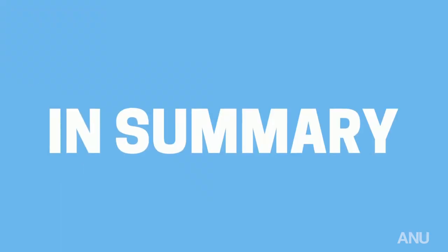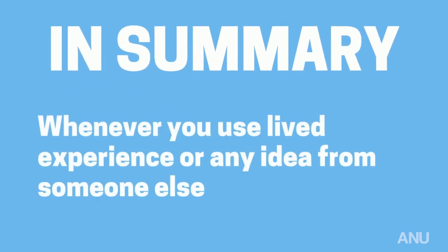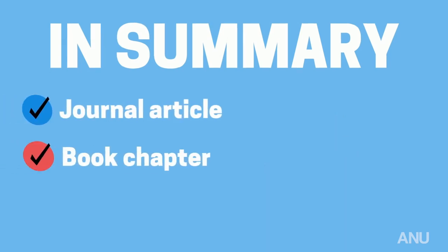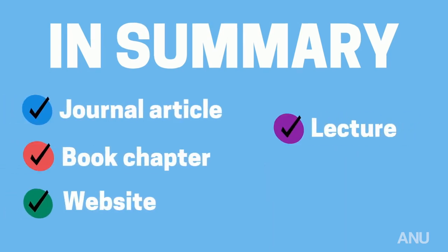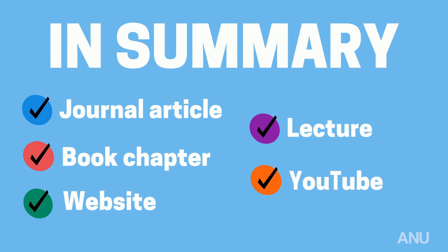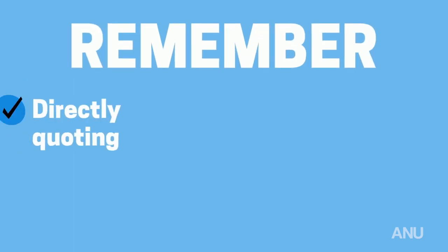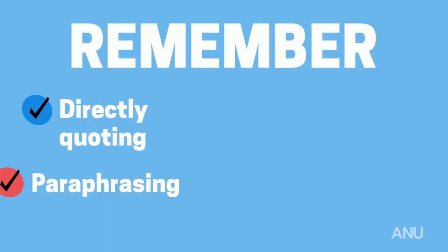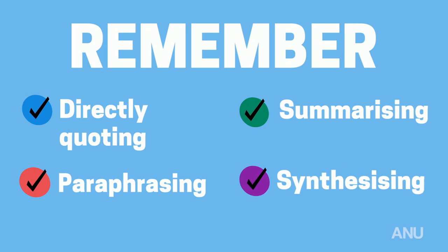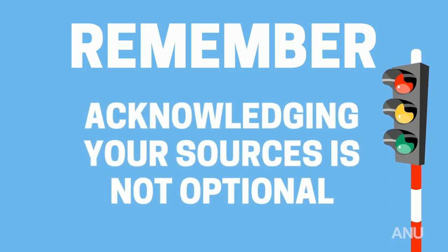In summary, whenever you use lived experience or any idea from someone else — be that a journal article, a book chapter, website, lecture or YouTube video — you should always cite the original author or authors to make it clear where the idea came from. Whether directly quoting, paraphrasing, summarizing or synthesizing, acknowledging your sources is not optional.